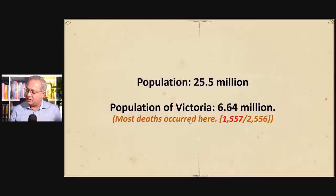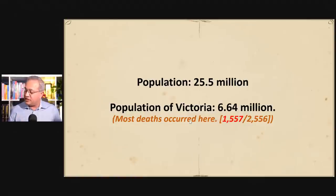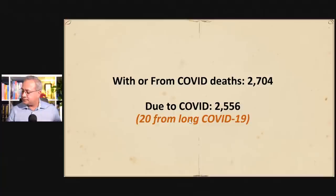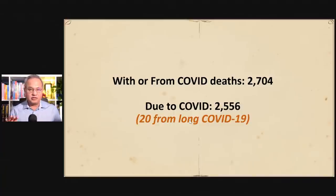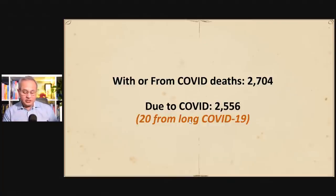Population was 25.5 million; population of Victoria was 6.64 million. However, most deaths occurred in Victoria — 1,557 deaths out of 2,556 total. Then there were 20 deaths from long COVID, which struck me — 20 patients out of all cases were those who had long COVID, where the COVID outcome continued after initial infection.